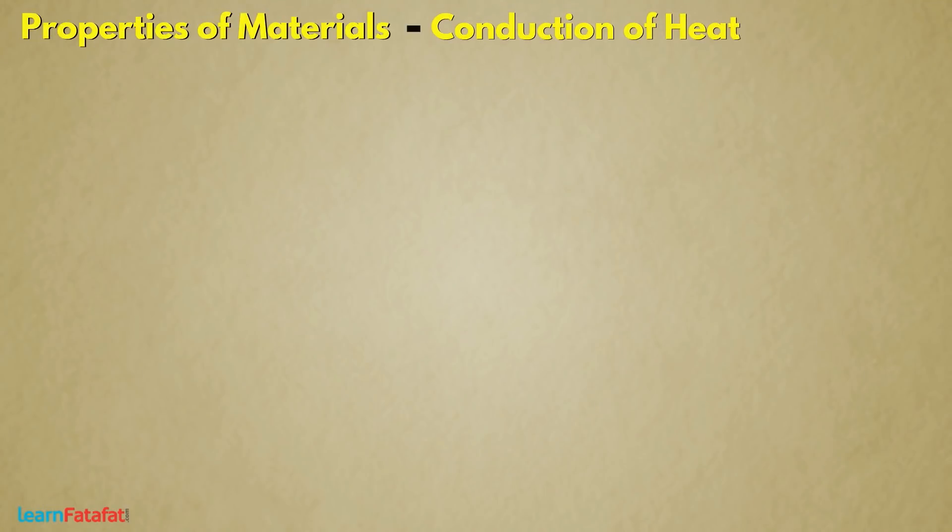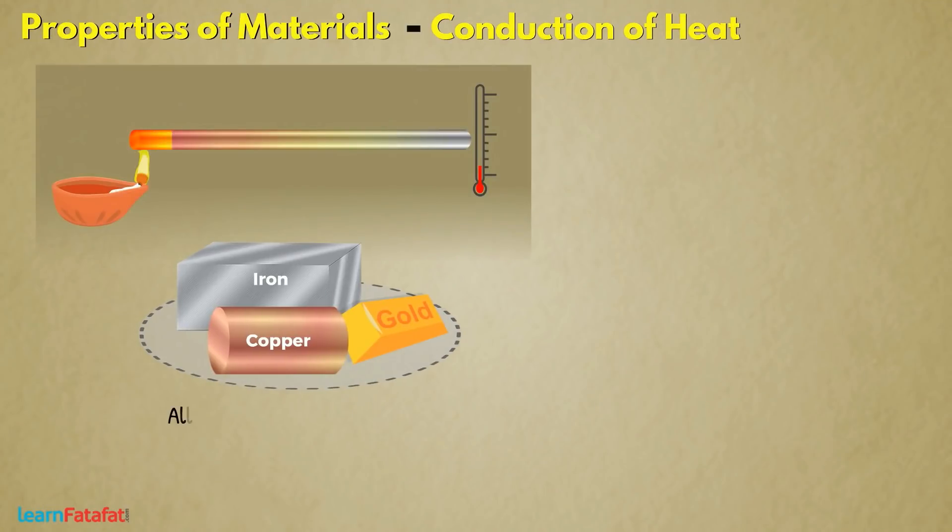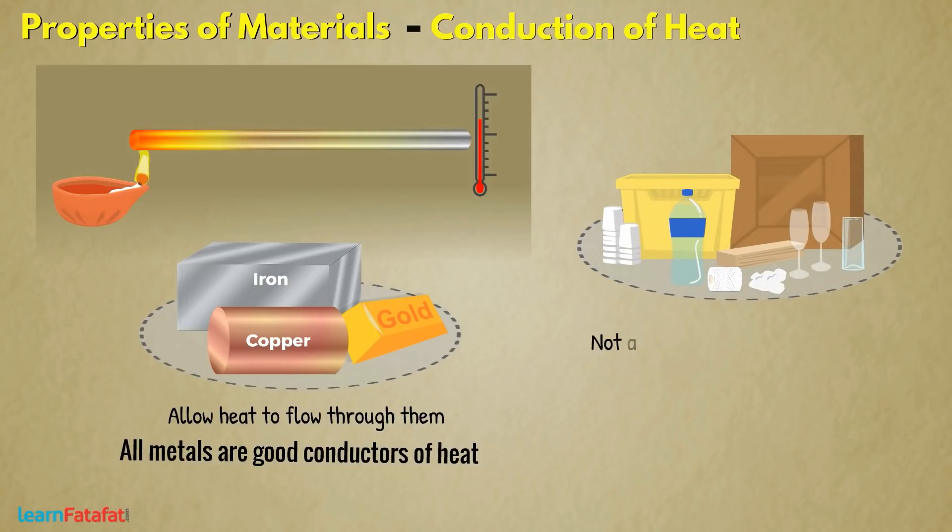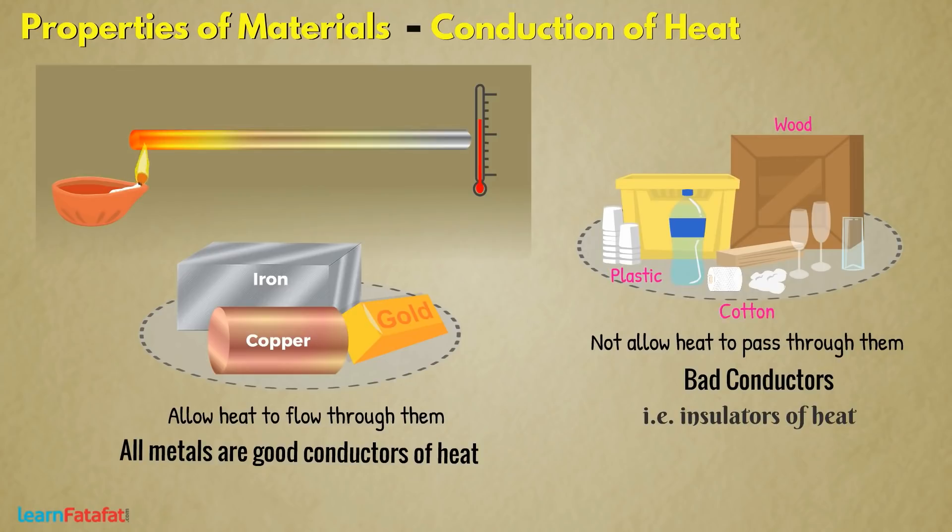Conduction of heat. Some materials allow heat to flow through them. For example, all metals are good conductors of heat. Other materials which do not allow heat to pass through them are bad conductors. That is, insulators of heat. For example, wood, plastic, cotton, glass, etc.